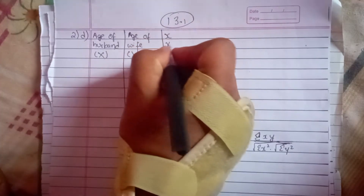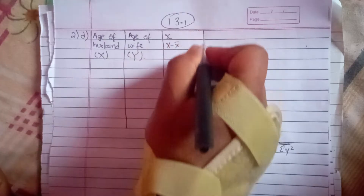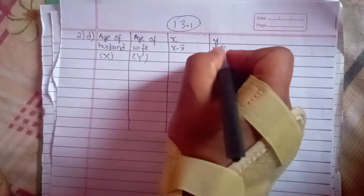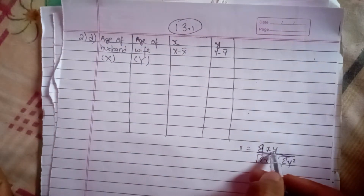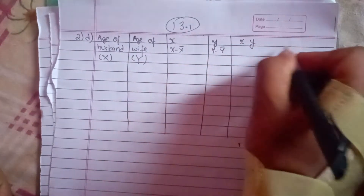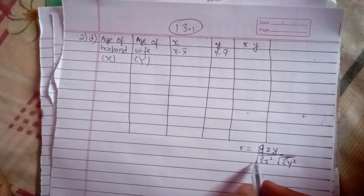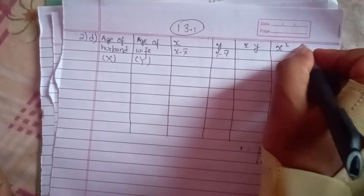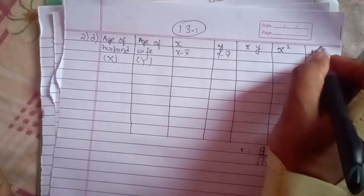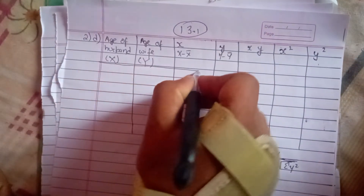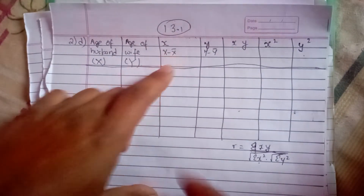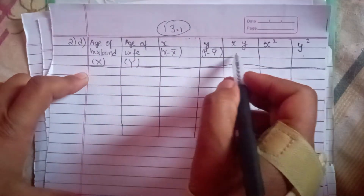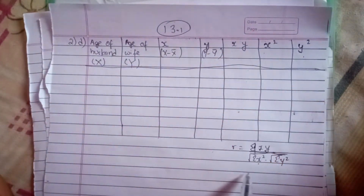The formula is r = Σxy / √(Σx² × Σy²), where small x = X minus X̄ and small y = Y minus Ȳ. This is the summation of xy divided by root under summation of x squared into root under summation of y squared.